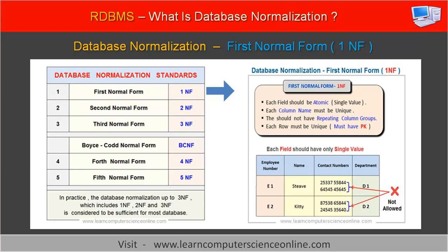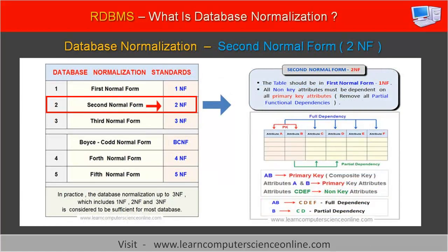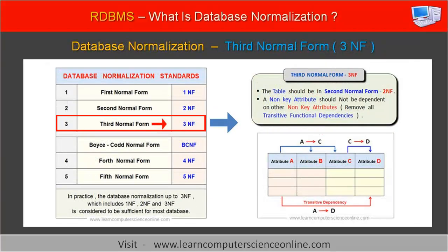The first normal form (1NF) rule states that each table cell should have an atomic value, no repeating column groups are allowed, and the table must have a primary key defined. The second normal form (2NF) rule states that the table must be in the first normal form and the table should not have any partial functional dependencies. Similarly, the third normal form (3NF) rule states that the table must be in the second normal form and the table should not have any transitive functional dependencies.